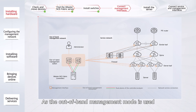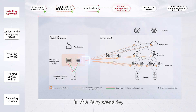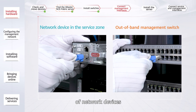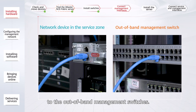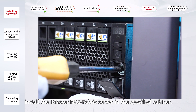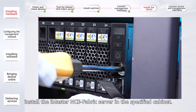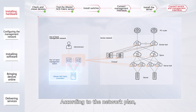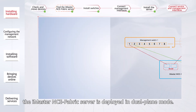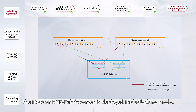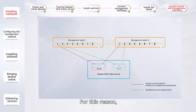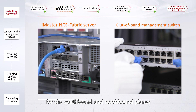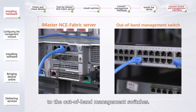As the out-of-band management mode is used in the easy scenario, you need to connect the management interfaces of network devices to the out-of-band management switches. Next, install the iMaster NCE Fabric server in the specified cabinet. According to the network plan, the iMaster NCE Fabric server is deployed in dual plane mode. For this reason, connect the Ethernet cables for the southbound and northbound planes to the out-of-band management switches.